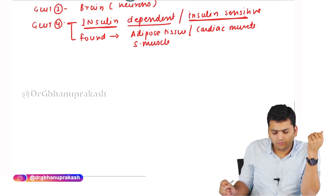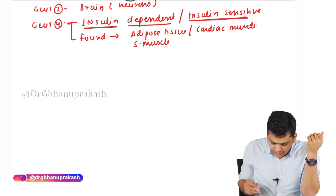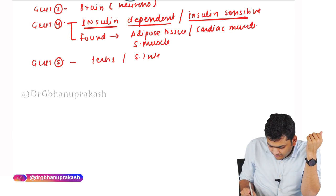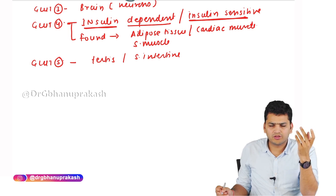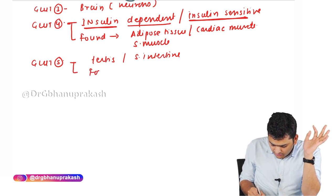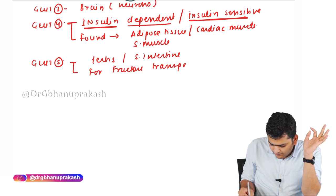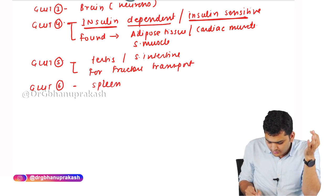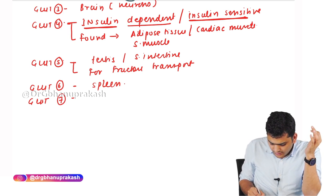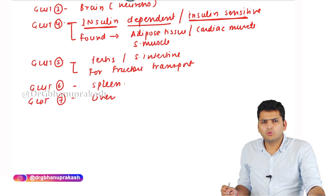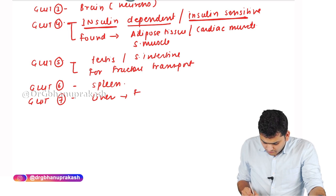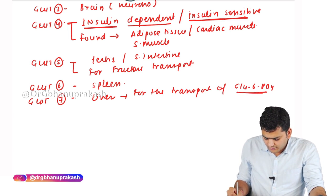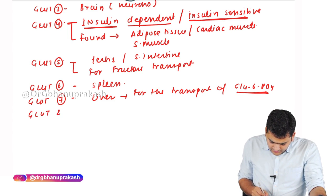GLUT 4 is found in adipose tissue, cardiac muscle, and skeletal muscle. GLUT 5 is found in the testes and small intestine, and it is specifically for fructose transport. GLUT 6 is non-specific and found in the spleen. GLUT 7 is found in the liver and is for the transport of glucose-6-phosphate.